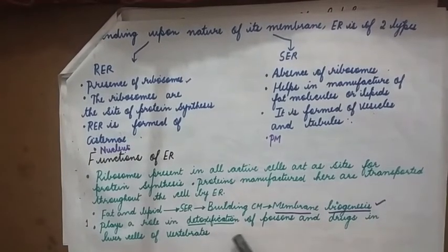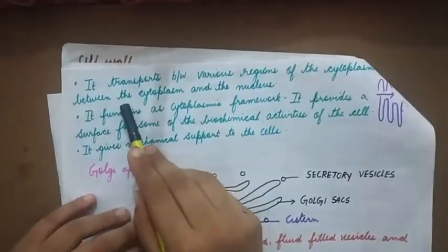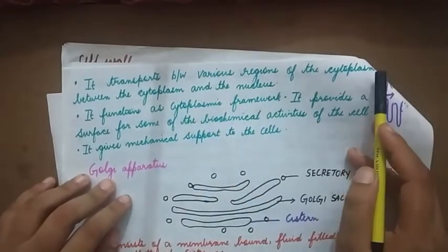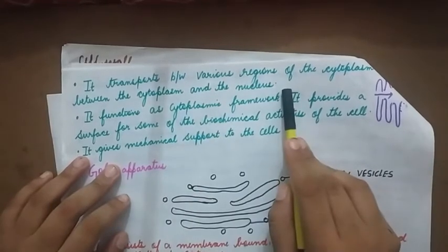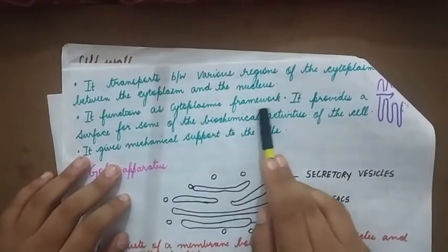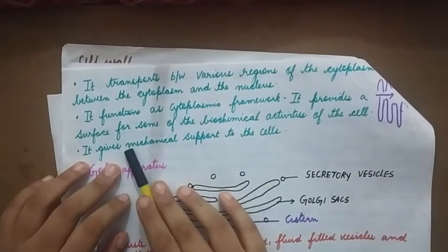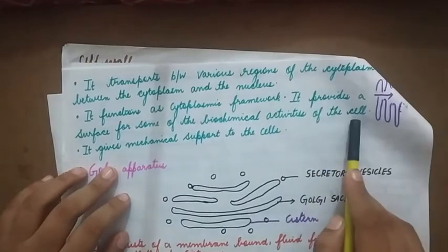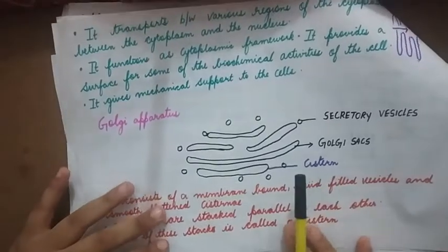The endoplasmic reticulum plays a role in detoxification of poisons and drugs in liver cells of vertebrates. It transports material between various regions of the cytoplasm and between the cytoplasm and the nucleus. It functions as a cytoplasmic framework, giving a skeletal structure to the cell. It also provides a surface for biochemical activities and gives mechanical support to the cells.